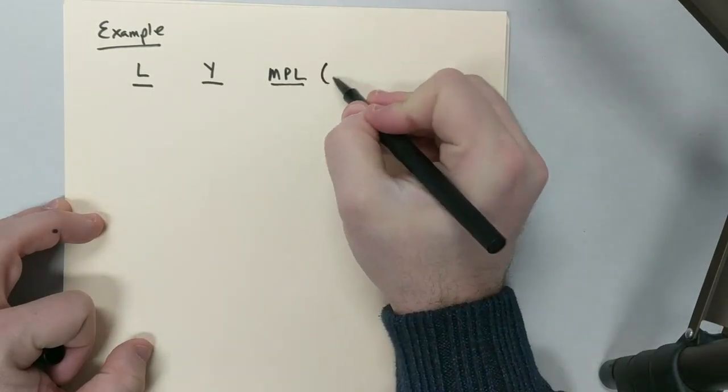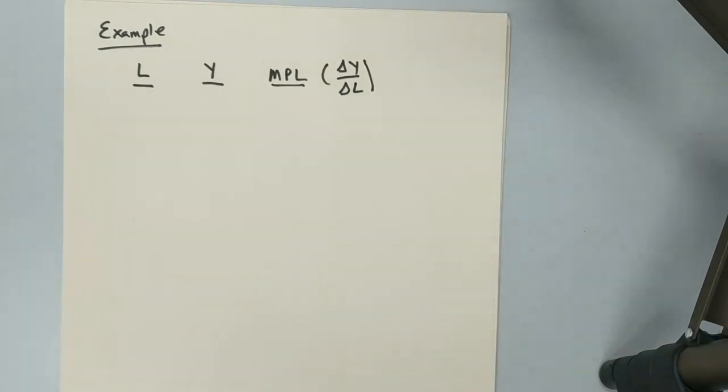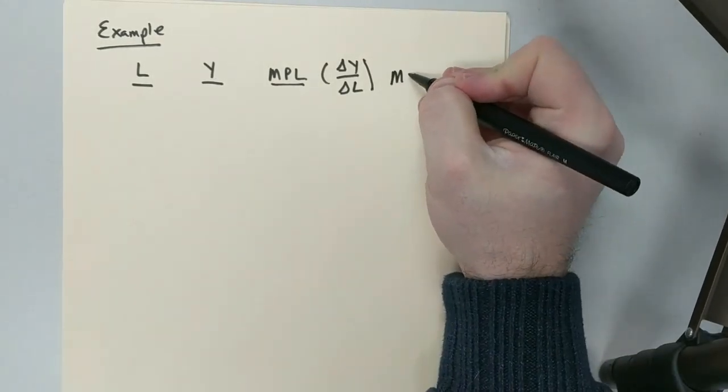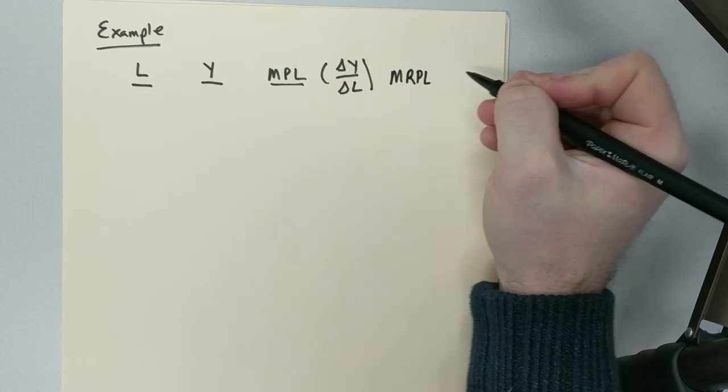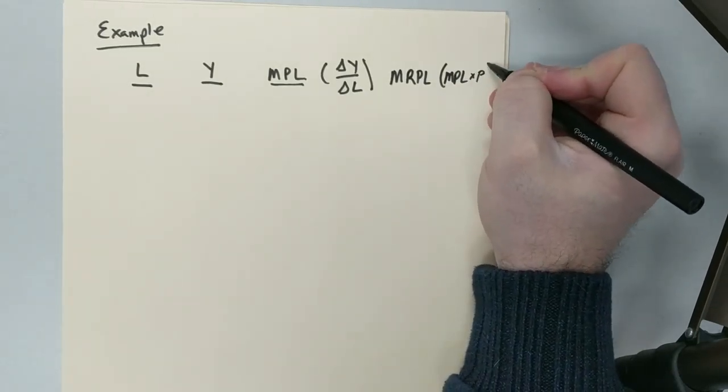which we know is how is my output changing if I change the number of workers that I hire. And then we are going to put MRPL, which is just the MPL multiplied by the price.